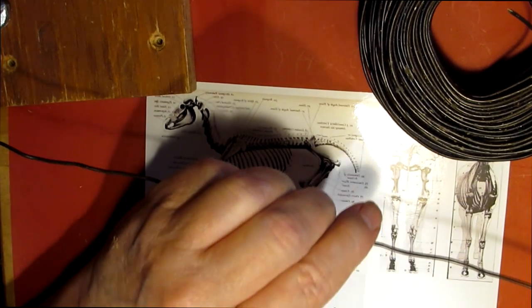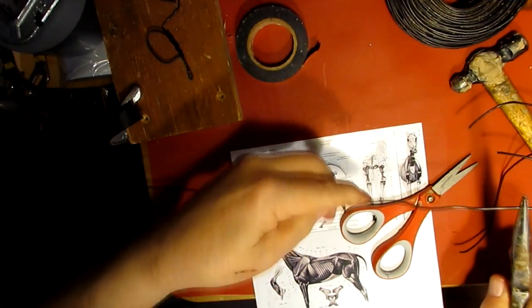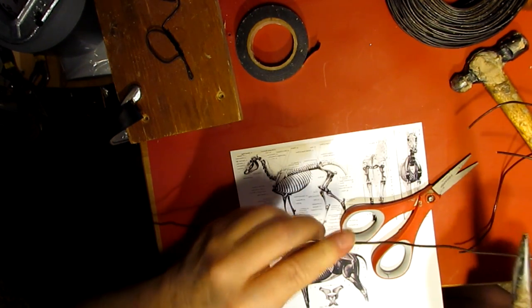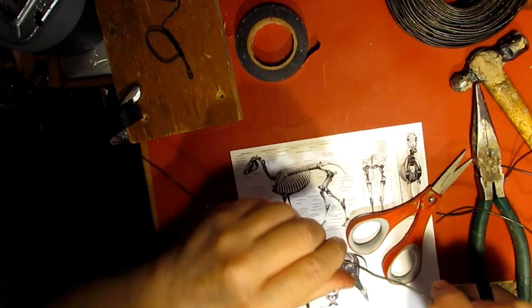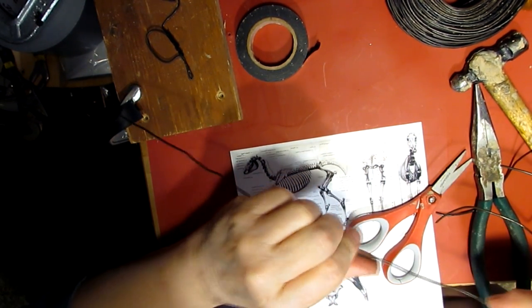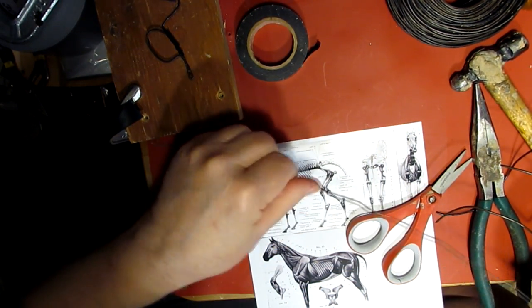Alright, I'll be back. I think I'm going to do seven horses, so I've got seven wires to straighten out.